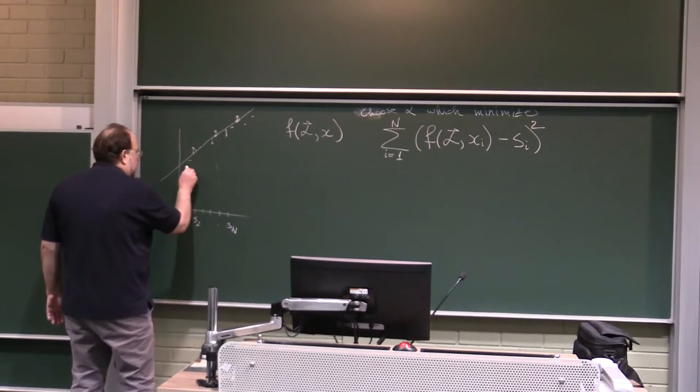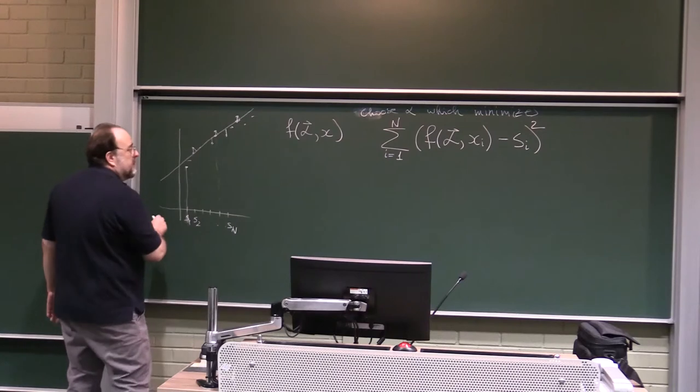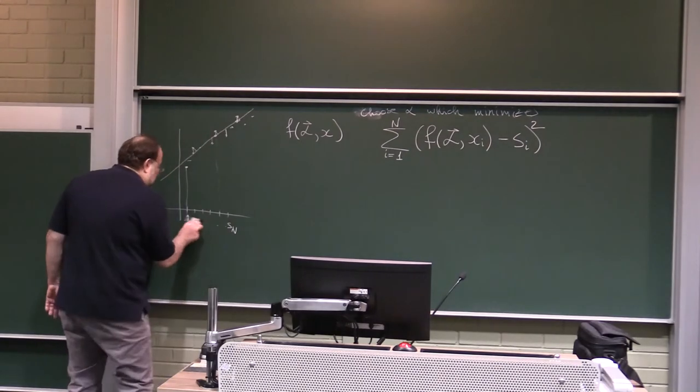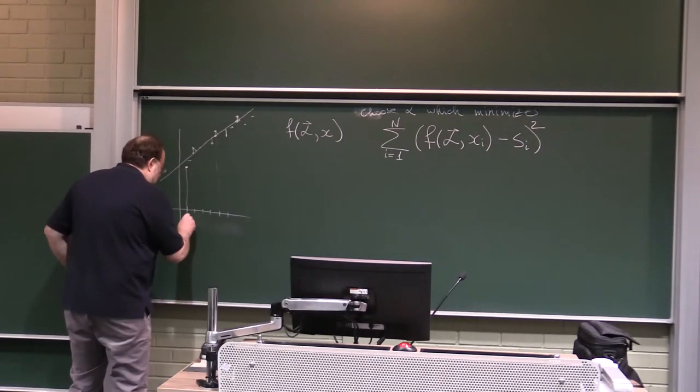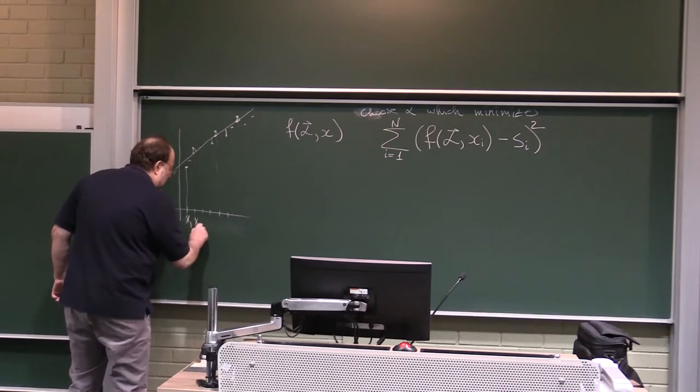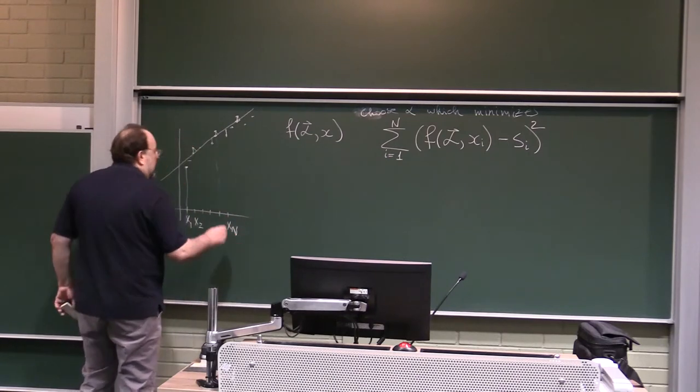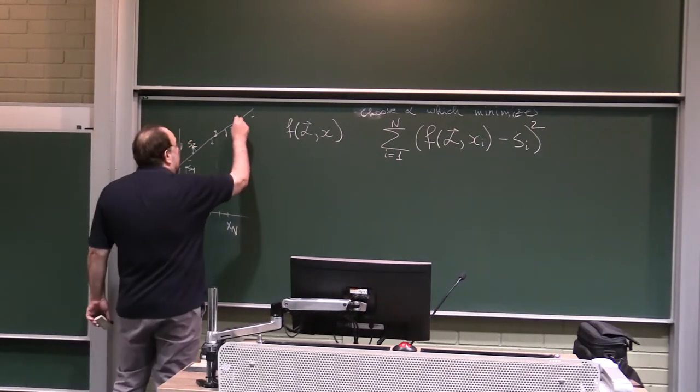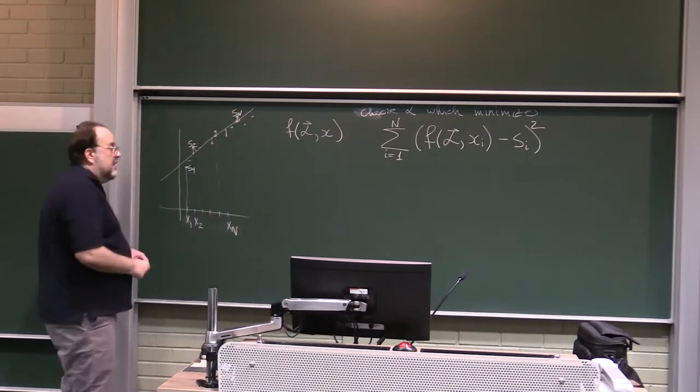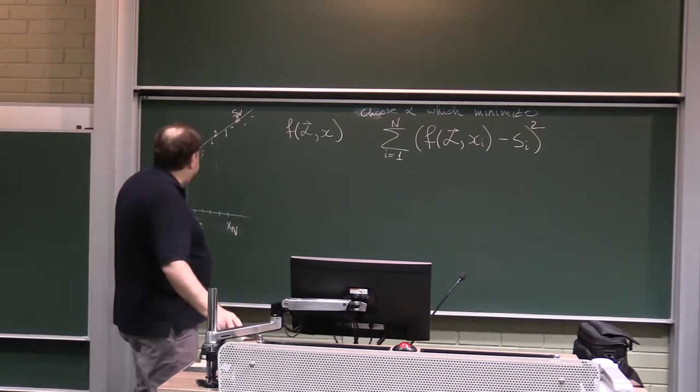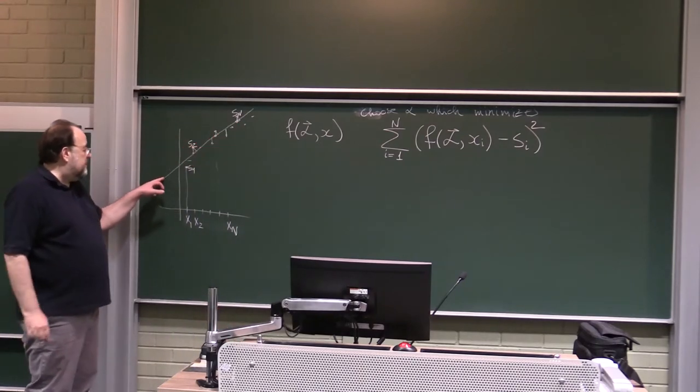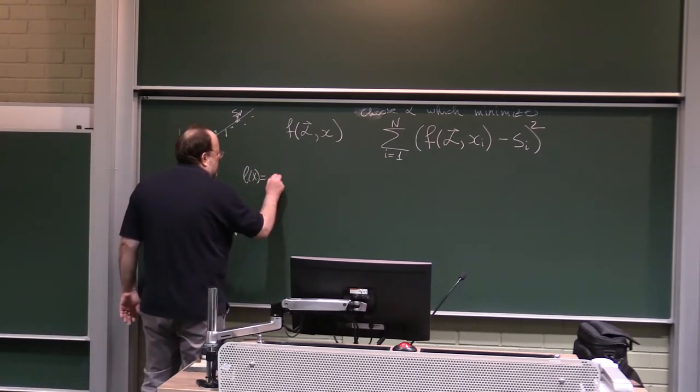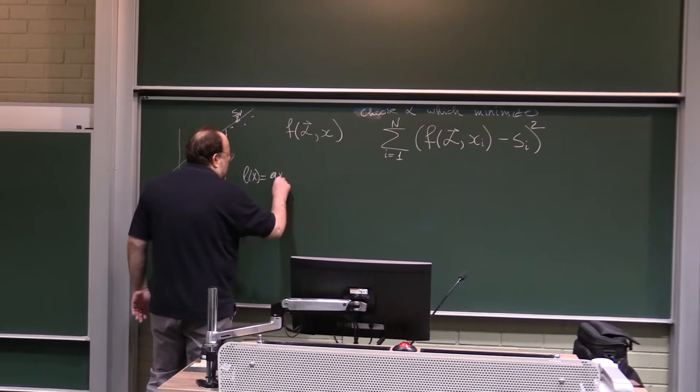This is sampling point s1, s2, up to sn, and then the difference f_alpha at x_i minus the sample value s_i, and then squared. So, minimize, or I should say, choose alpha which minimizes this difference. If this is sample point s1, this here, I am calling them s's and the values. So let me put here x1, x2, up to xn, and here is the value s1, this value s2, and here is value sn. And if this is a line, a line is parameterized by just two parameters.